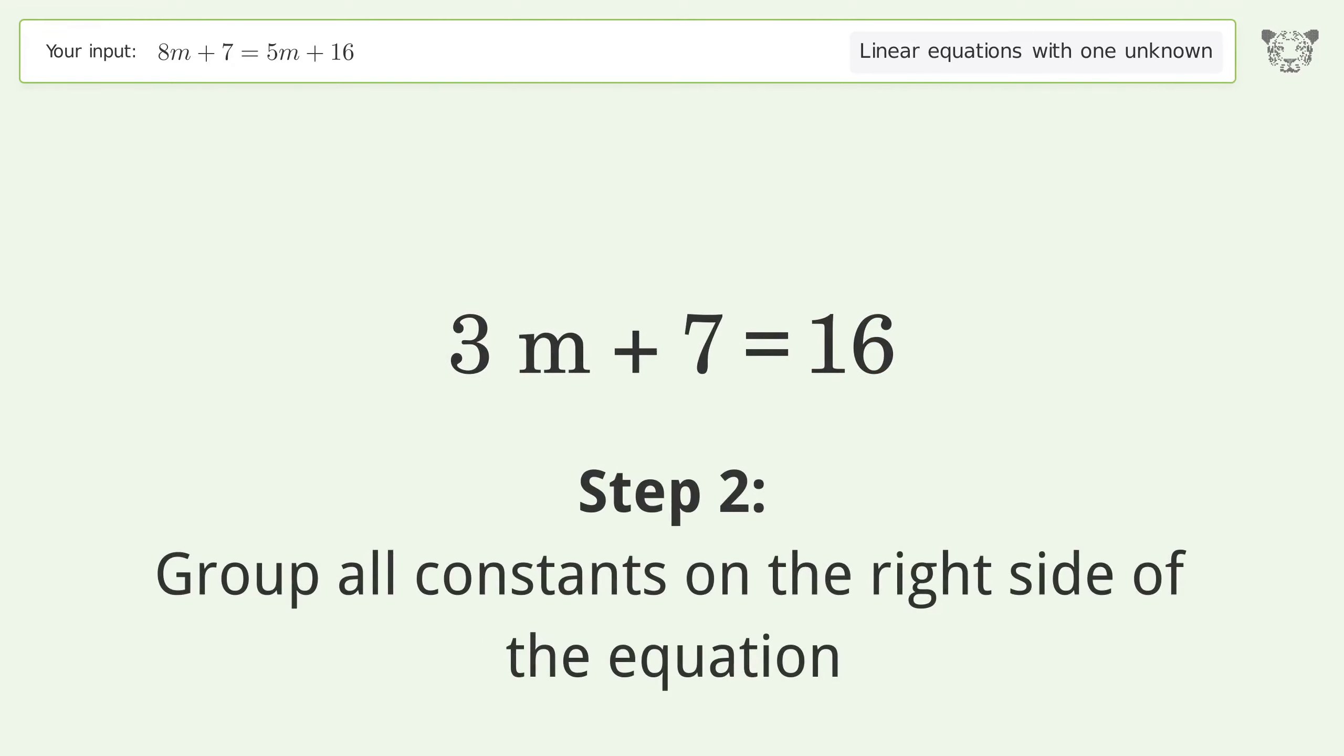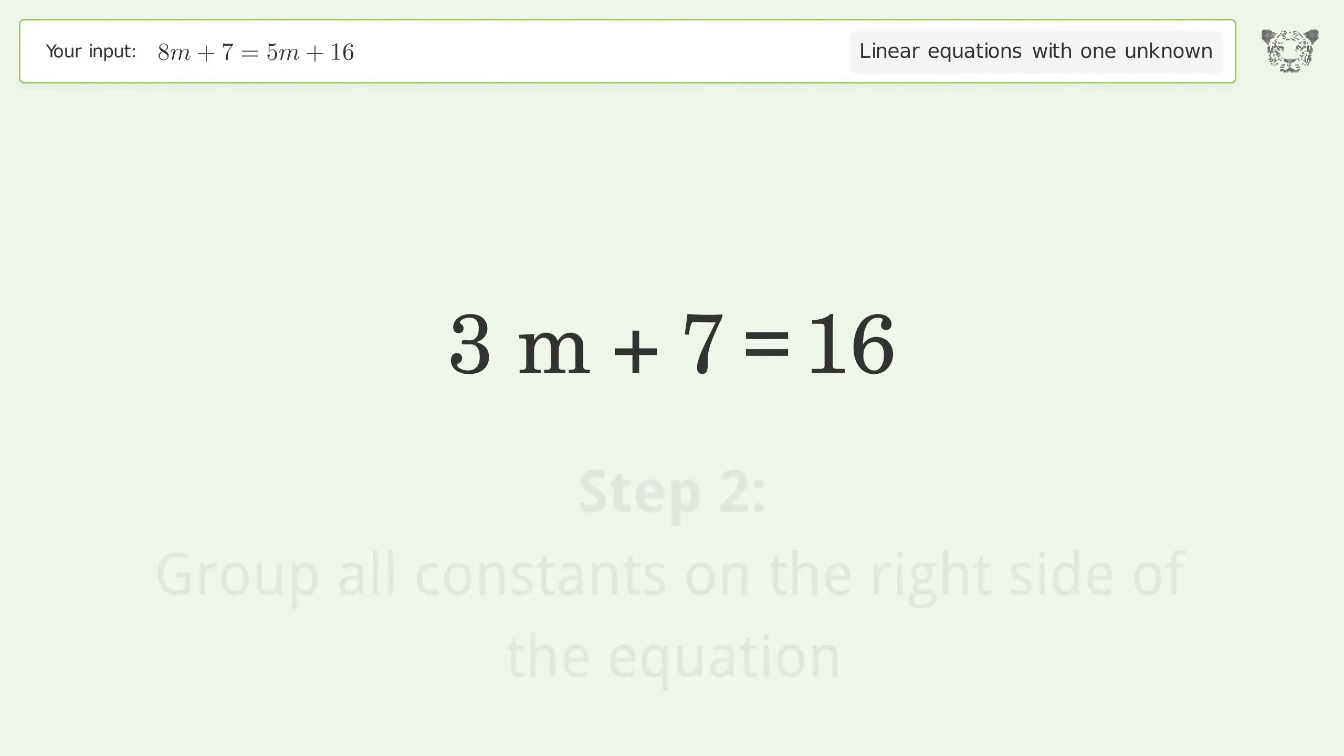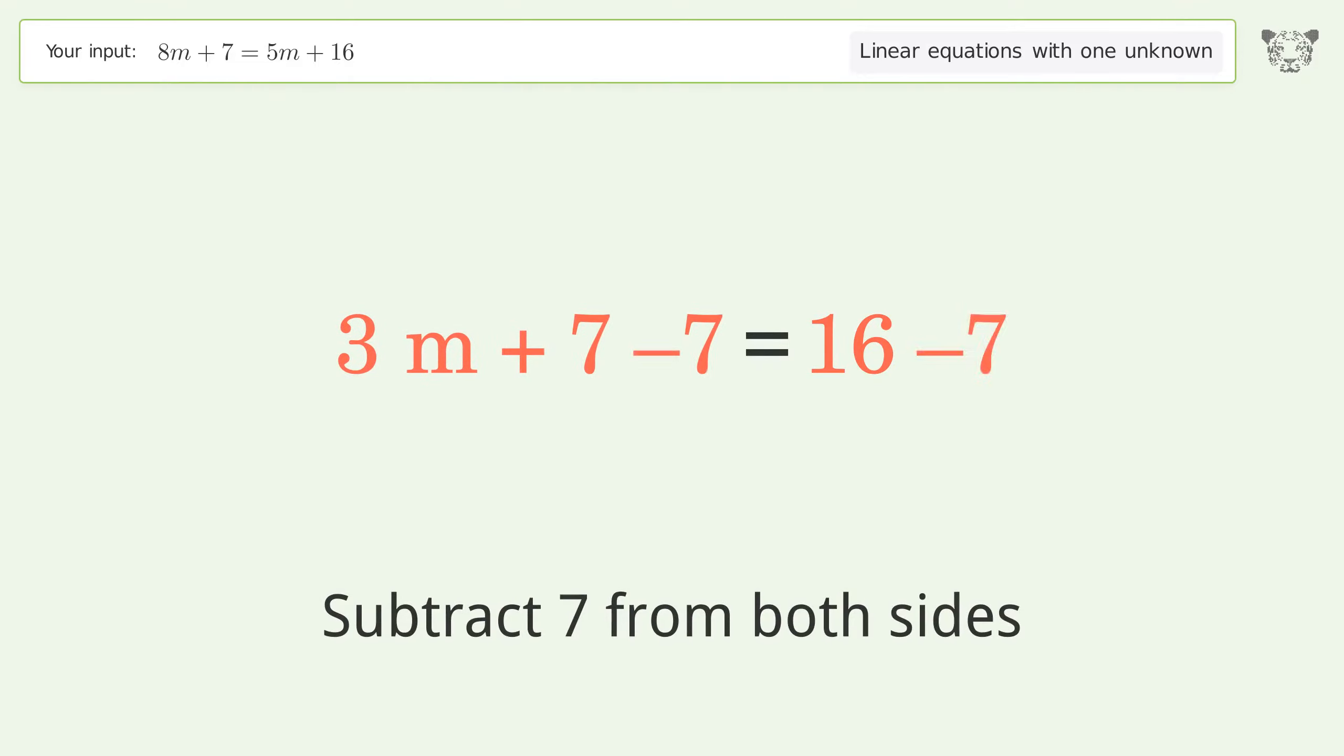Group all constants on the right side of the equation. Subtract 7 from both sides. Simplify the arithmetic.